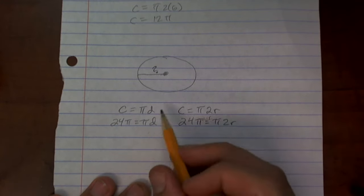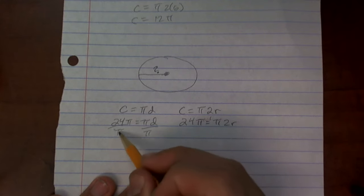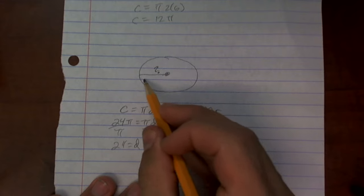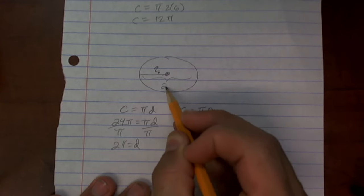Well here, now to solve for d, divide by pi. So you get 24 equals your diameter. So that would be the distance, would be 24.